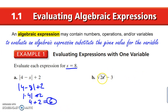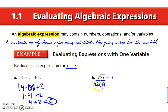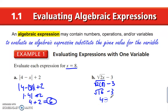Here we have the square root of 2 times x, so we're going to plug in 8 again. Any time you replace a variable with a value, put it in parentheses — that way this is not 28, it's 2 times 8. 2x means 2 times x. So 2 times 8 is 16; the square root of 16 is 4, minus 3 is 1.